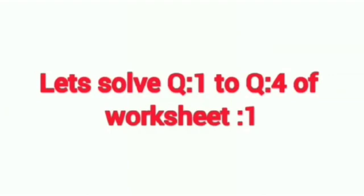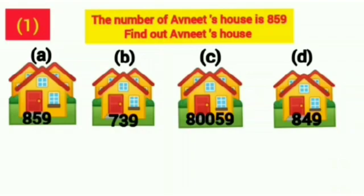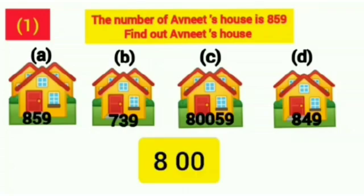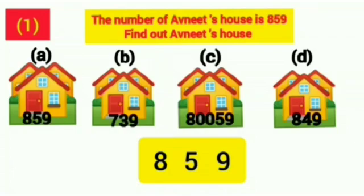Let's solve question number 1 to question number 4 of worksheet 1. Question number 1: The number of Avneet's house is 859. Find out Avneet's house. We have 4 different options. First we will take 800, then 50, then we will put a card of 9. The number formed is 859, which is given on option A. So we will take the correct option A.